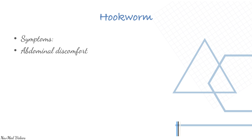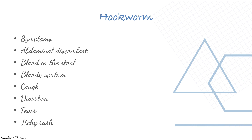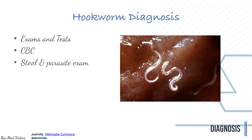What are the symptoms of hookworm? Abdominal discomfort, blood in the stools, bloody sputum, cough, diarrhea, fever, and itchy rash. Some may have nausea and vomiting as well. Diagnosis of hookworms: a complete blood count and stool and parasitic exam is the main diagnostic modality. This is how you see hookworm in the stools.